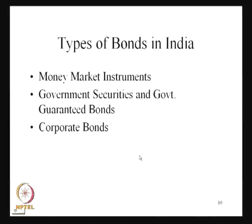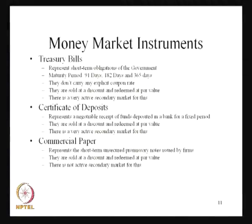Coming back to India, there are different bonds which are available. We have the money market instruments — already we have seen on the basis of the term to maturity, the categorization of bonds and bond markets can be made. In terms of India, we have money market instruments where the short-term bonds are available. Then we have the government securities and the government guaranteed bonds, as well as the corporate bonds. On the basis of ownership also, the bond markets have been categorized and different instruments have been issued by the different markets on the basis of the requirement of the investor.